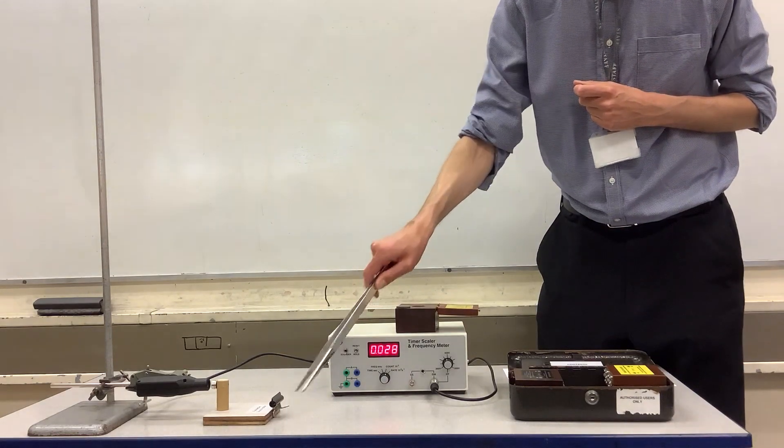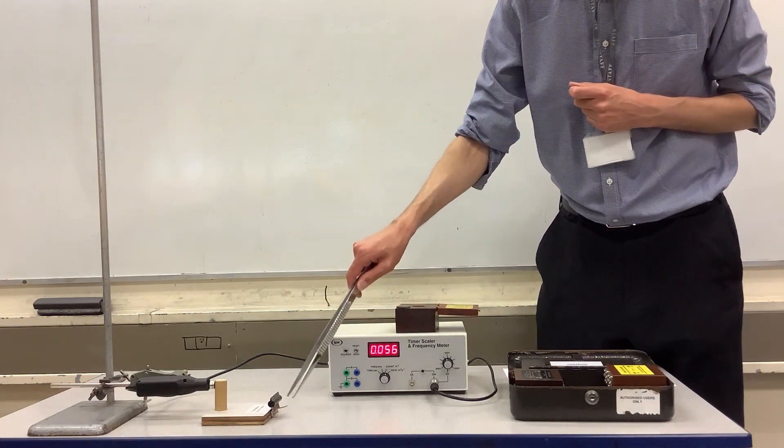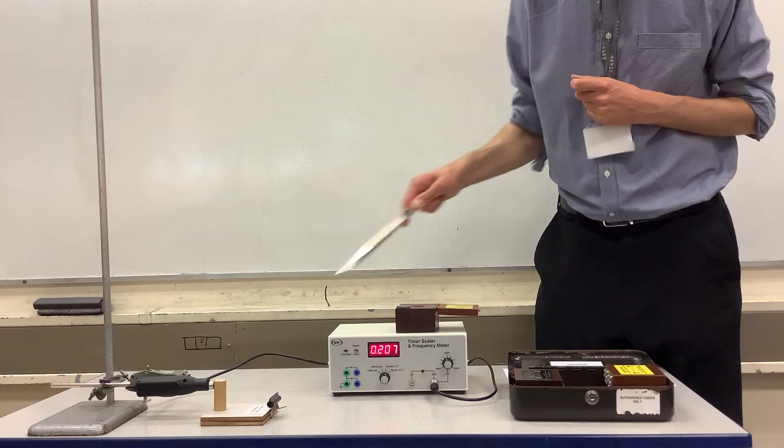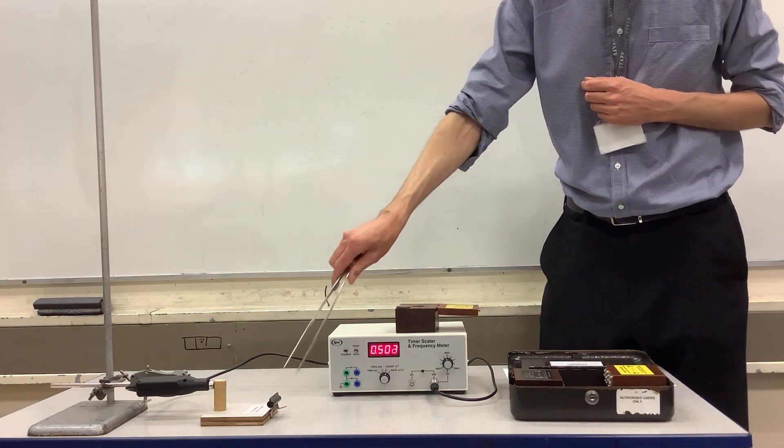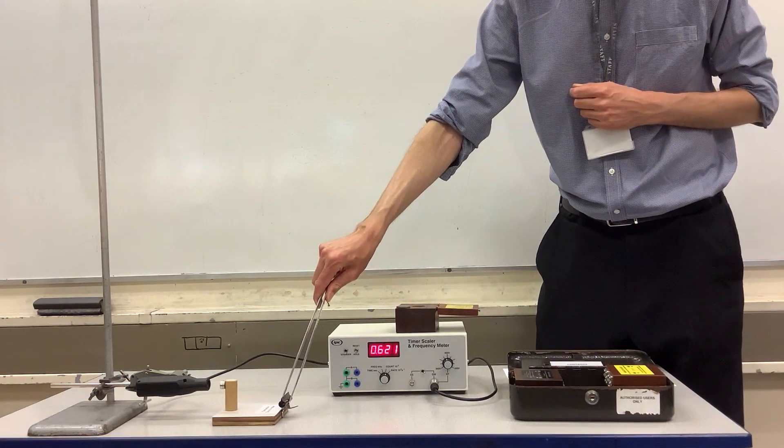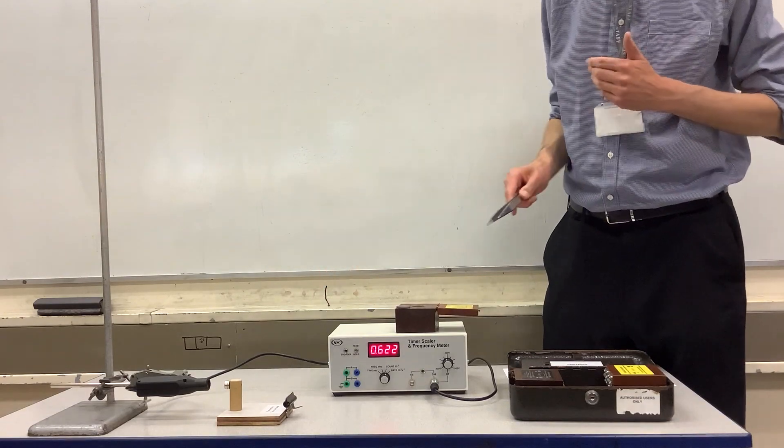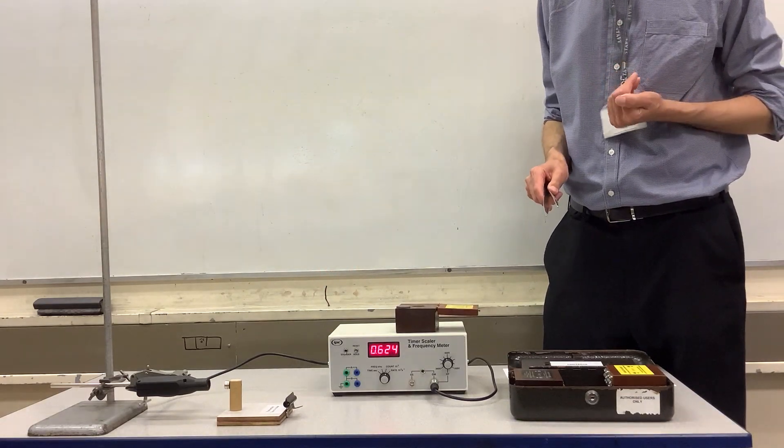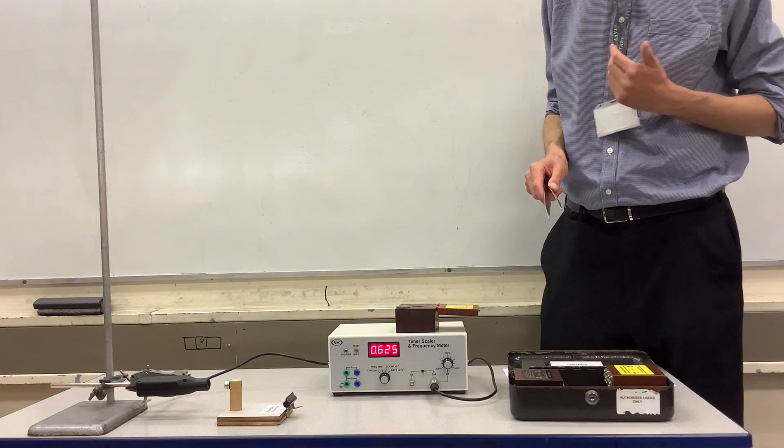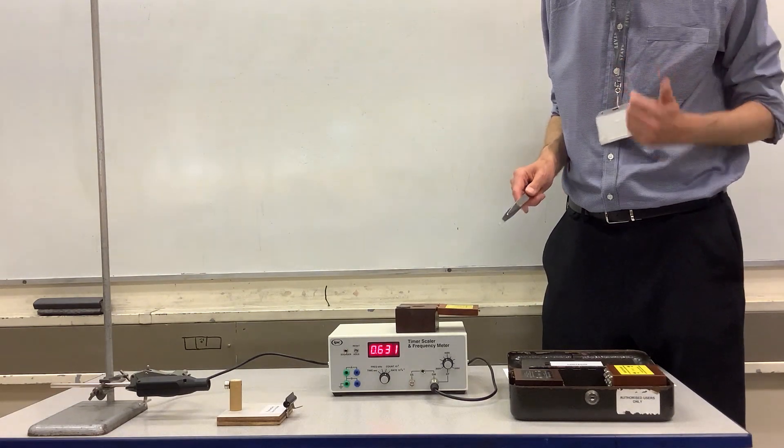If I push it so it's only a few millimeters away, then we start to get a lot of alpha radiation being detected. But as soon as I move it a few centimeters back, I'm getting almost no alpha radiation detected, which is telling us that the alpha radiation can only go a few centimeters in air.